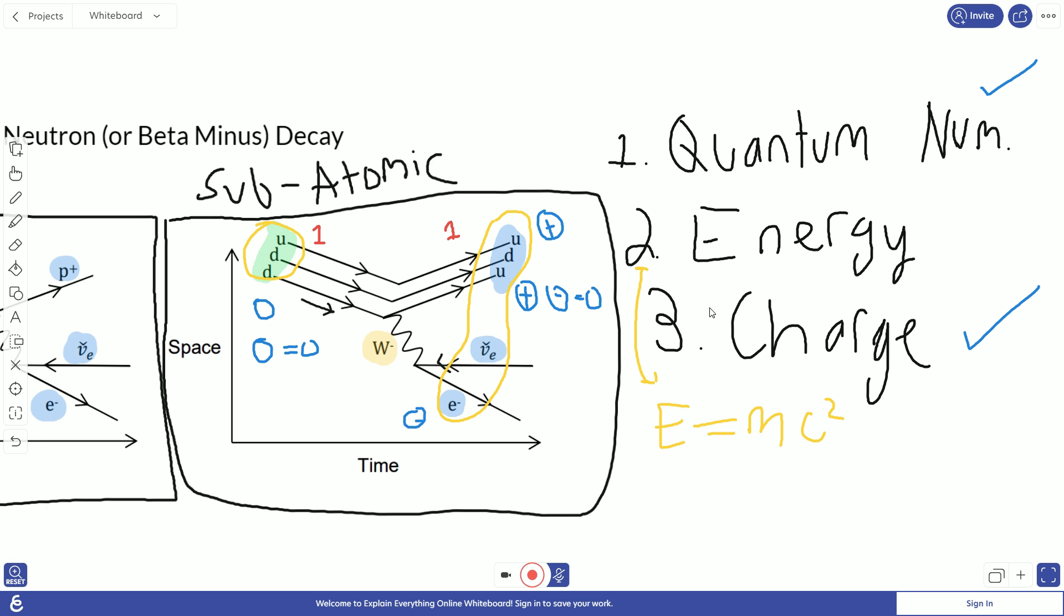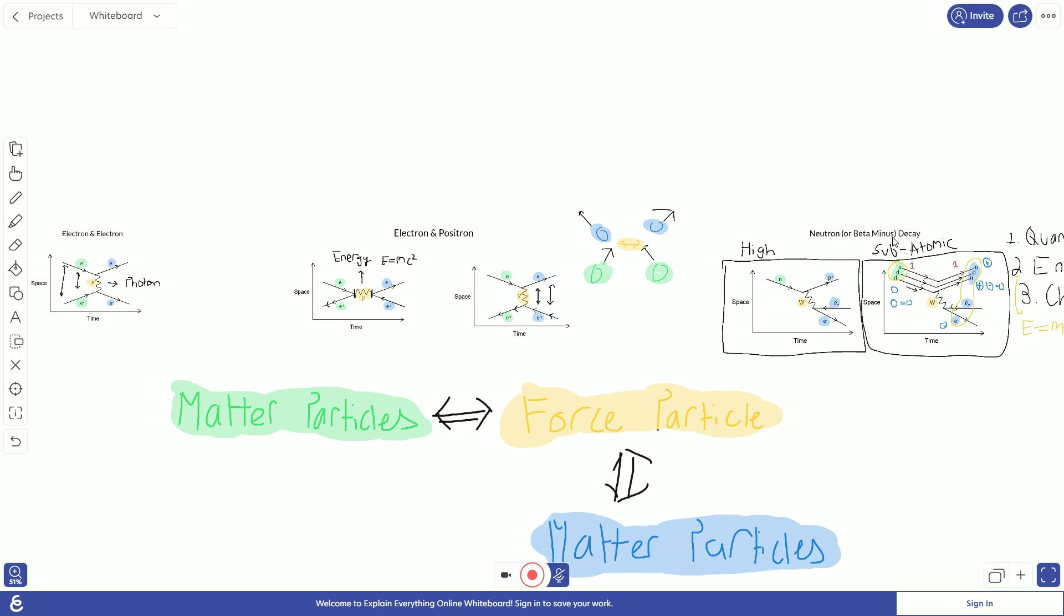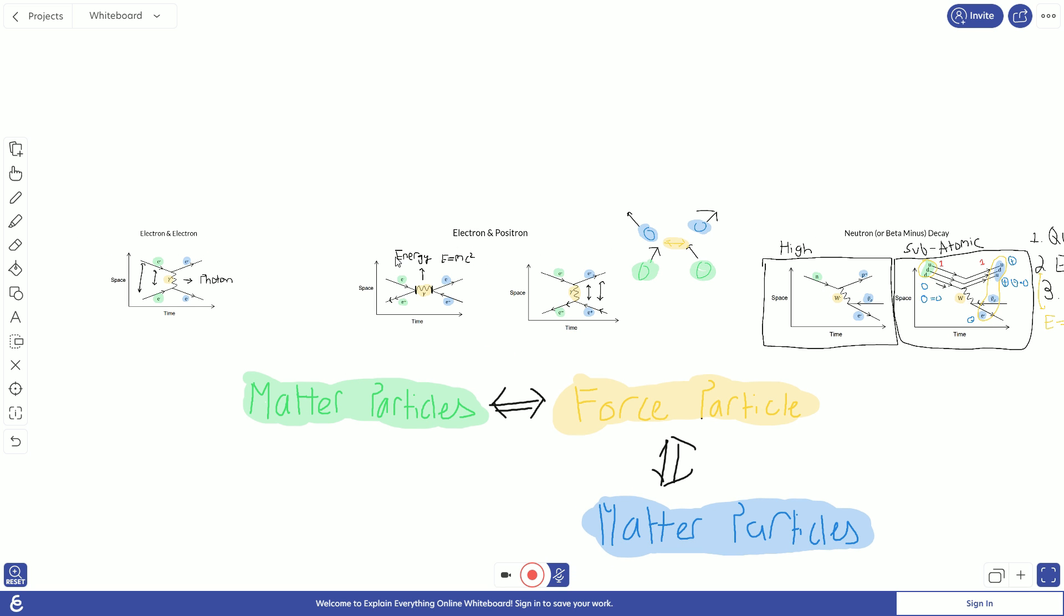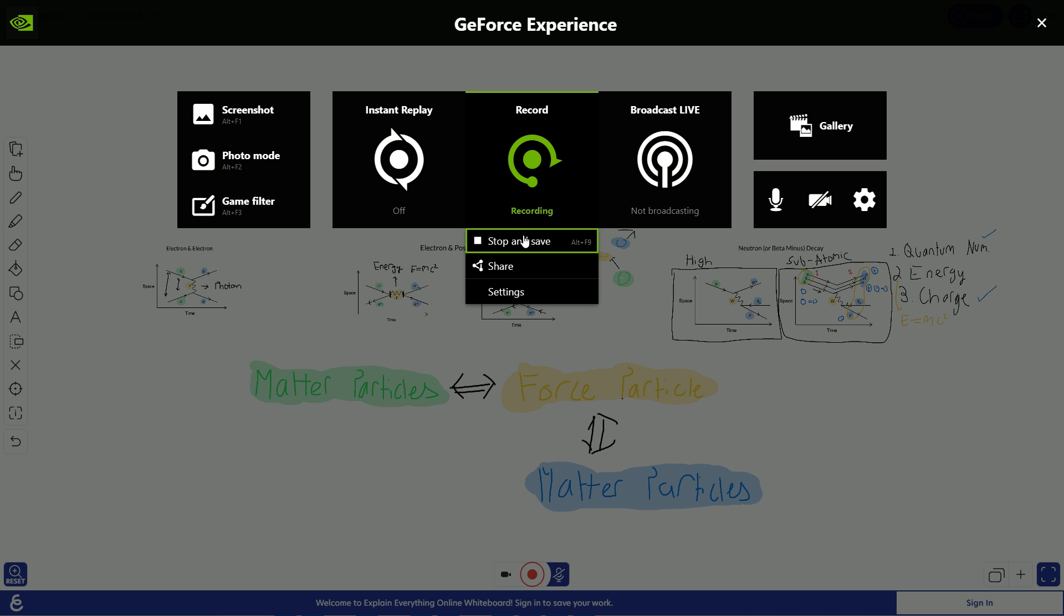So there you have it. Those are your three categories of Feynman diagrams we need to look at. In each, matter particles use a force particle, and then matter particles are produced in the end. You have electron and electron repulsion, electron and positron annihilation and repulsion, and then beta minus decay. Thank you.